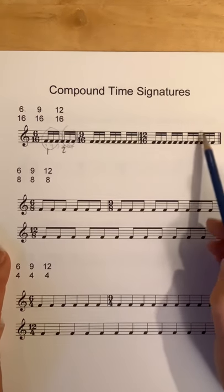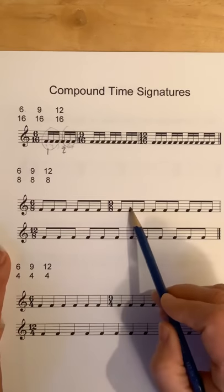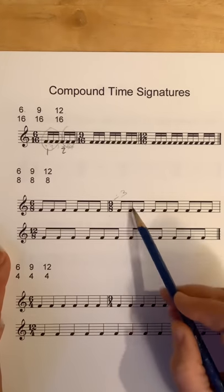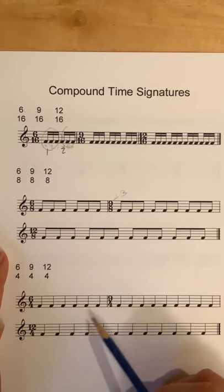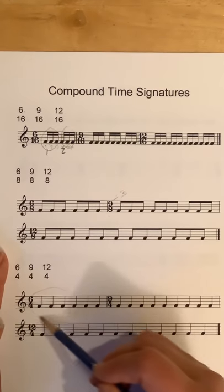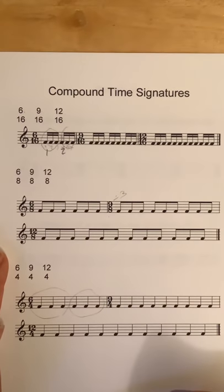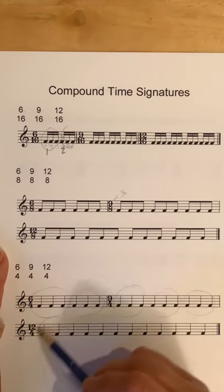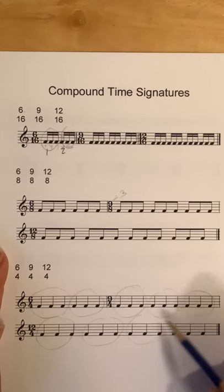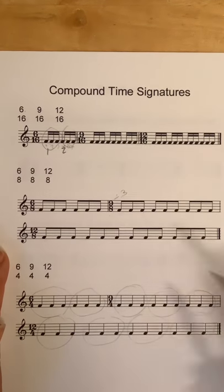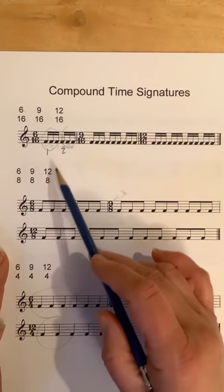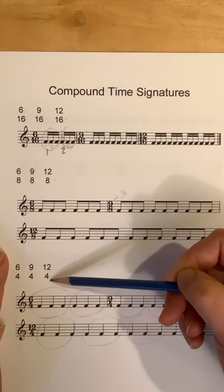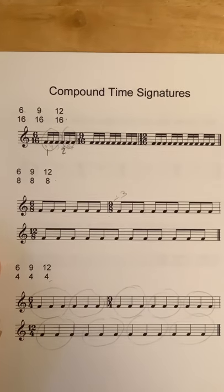Four groups of three sixteenth notes in 12/16. Nine-eight: three groups of three eighth notes. And in 12/4, groups of quarter notes — they're a little harder to see because they're not beamed together, but there are groupings of three. So the top numbers are always six, nine, and twelve — divisible by three — and the bottoms are only sixteen, eight, or four. There are no other compound time signatures. That's it. Those are our compound times.